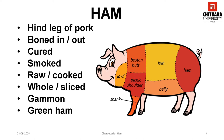Ham, in its more general meaning of hind leg, is applied to cured meat from other animals also, including wild boar, mutton, goat, venison, and even badger.